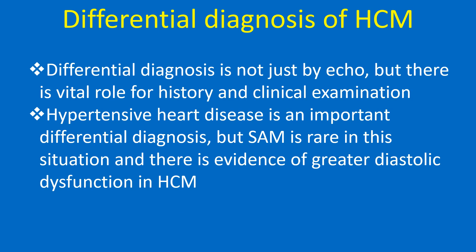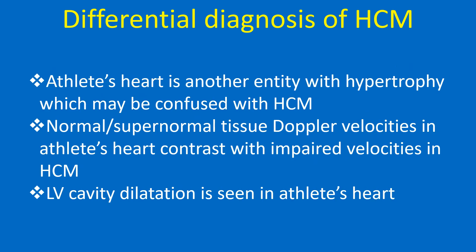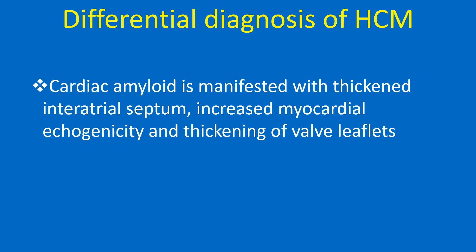Differential diagnosis of HCM is not just by echo; there is a vital role for history and clinical examination. Hypertensive heart disease is an important differential diagnosis, but SAM is rare in this situation and there is evidence of greater diastolic dysfunction in HCM. Athlete's heart is another entity with hypertrophy which may be confused with HCM; normal or supernormal tissue Doppler velocities in athlete's heart contrast with impaired velocities in HCM, and LV cavity dilatation is seen in athlete's heart. Cardiac amyloid is manifested with thickened inter-atrial septum, increased myocardial echogenicity, and thickening of valve leaflets.